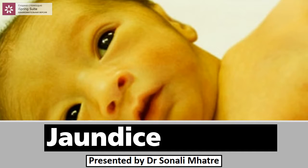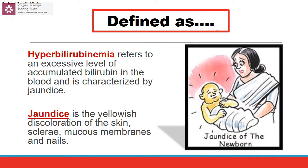Hello, this is Dr. Sonali bringing an essential topic of neonatology from the Neonatal Hub channel. The topic is jaundice in a newborn. Jaundice, also known as hyperbilirubinemia, can be of two types: direct or indirect. We are going to discuss indirect hyperbilirubinemia, with a separate lecture on direct jaundice. Hyperbilirubinemia is defined as an excessive level of accumulated bilirubin in the blood, characterized by jaundice — the yellowish discoloration of the skin, sclera, and mucous membranes.